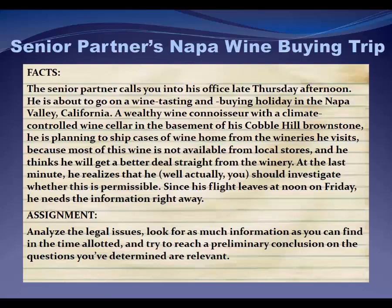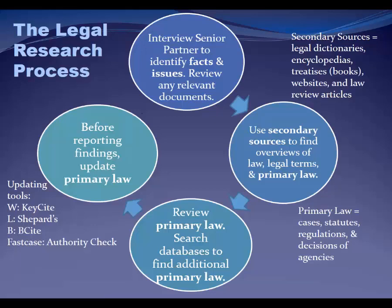So now let's spend a minute talking about how you go through the process of a legal research problem like the one you see here. What are the first steps? How do you develop a legal research plan? How do you effectively and efficiently conduct legal research? And how do you formulate advice — are you going to send the partner off on his wine buying spree with a happy face or not? Since this is the first class, we're going to spend a little time talking about the process: how do you break the problem down, how do you analyze it, and how do you formulate the answer so you can present it to a senior lawyer or to a client?